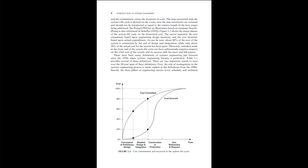There have been many definitions of systems engineering put forward since the 1950s when systems engineering became a profession. Table 1.1 provides several of these definitions. There are two important trends to note over the 20-year span of these definitions. First, the role of management in the system's engineering process is made explicit in the definitions from the 1990s.